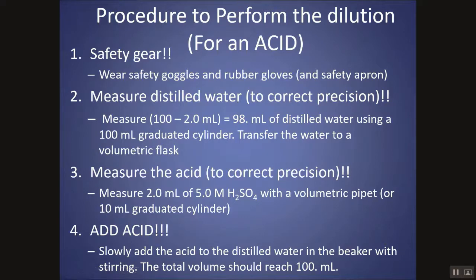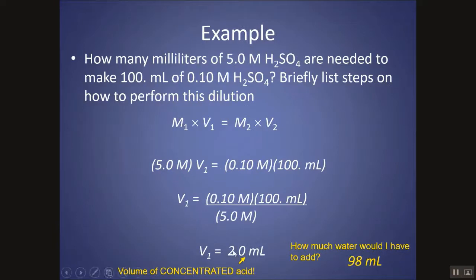And then you'd want to add your acid to the water, to that 98 milliliters of water. If it's not an acid, then it doesn't matter the order of things that you add. If it's not an acid, if this were something completely different, then I could just say, okay, take a volumetric pipette, take out two milliliters of this five molar solution, add it to a volumetric flask, and then add enough distilled water to get to 100 milliliters. Then you can do that.